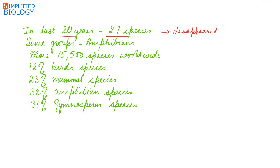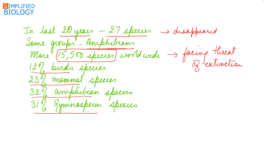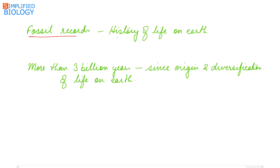This disappearance is not random — some groups are more vulnerable, like the amphibians. More than 15,500 species worldwide are facing the threat of extinction, including 12% of bird species, 23% of mammals, 32% of amphibians, and 31% of gymnosperms.